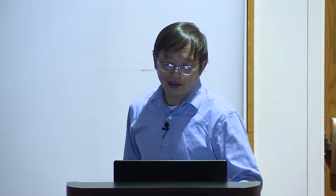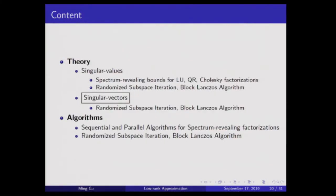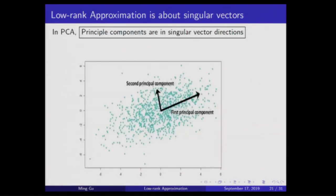That was singular values. Now we move to singular vectors. As mentioned earlier, singular vectors are more tricky. But when you do data analysis, people talk about PCA — principal component analysis. The principal components are directions: their directions are exactly singular vectors. So singular vectors are important, and people typically don't analyze these because they are nasty.